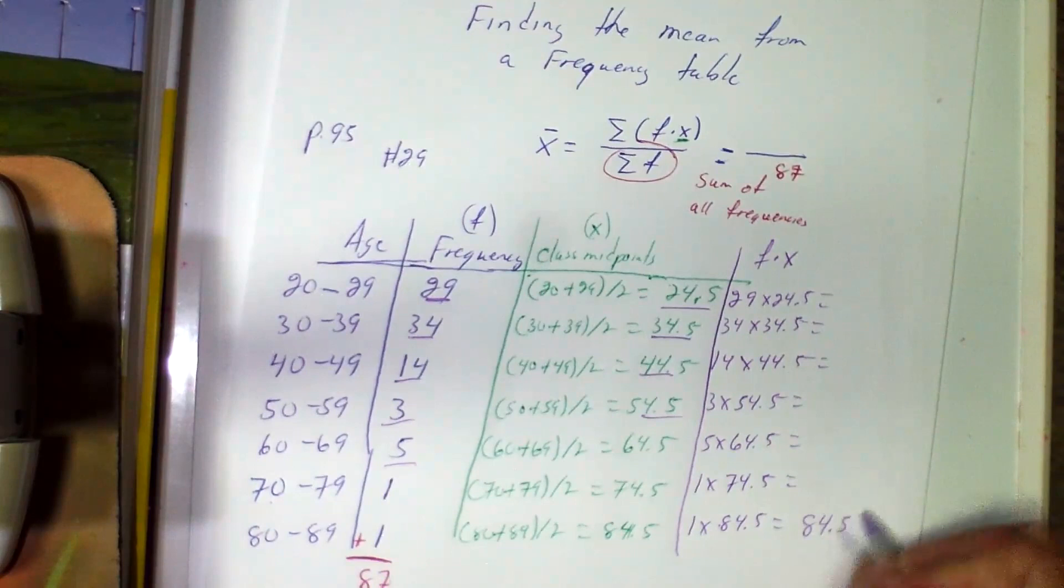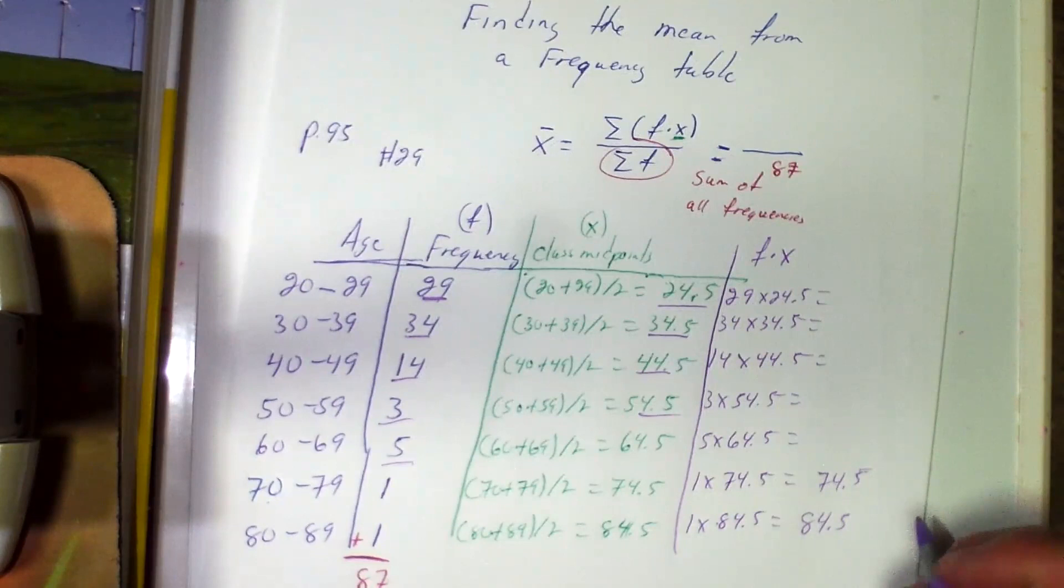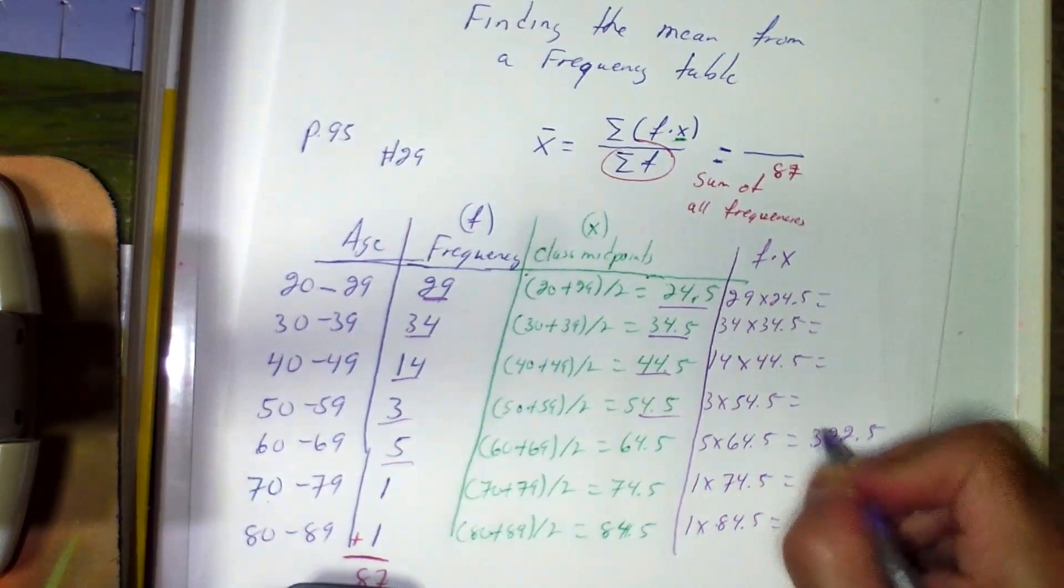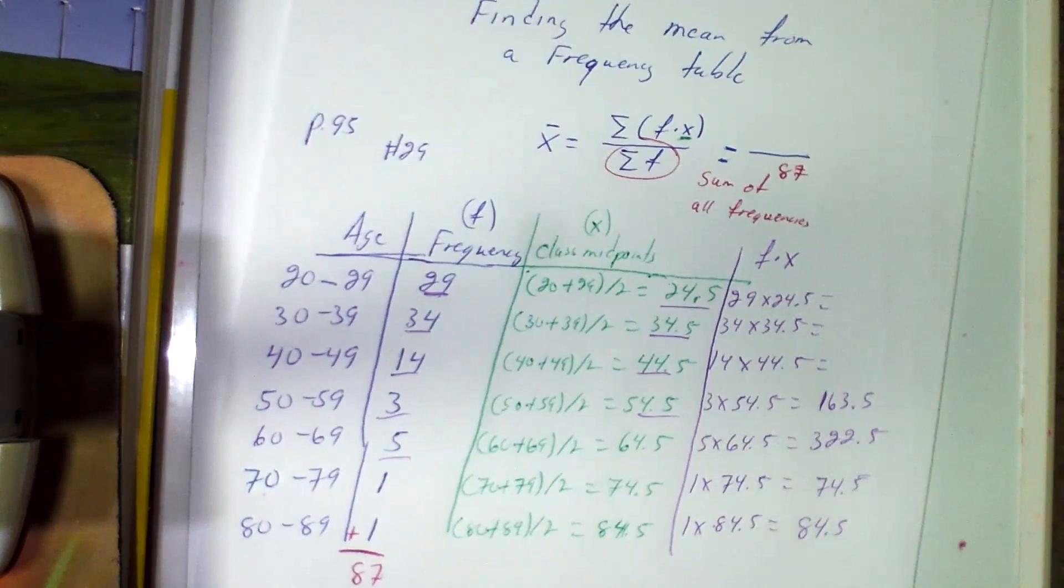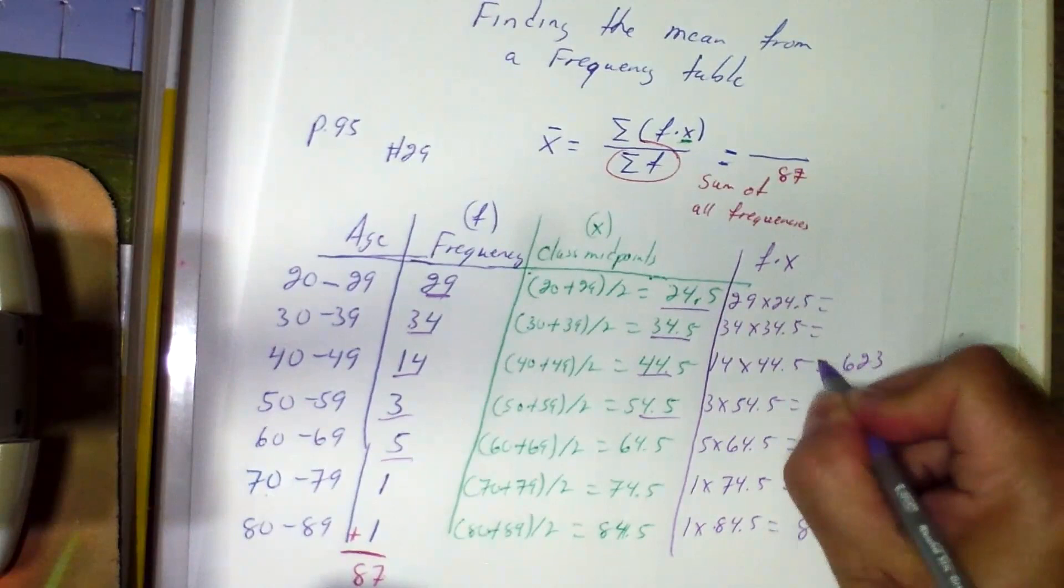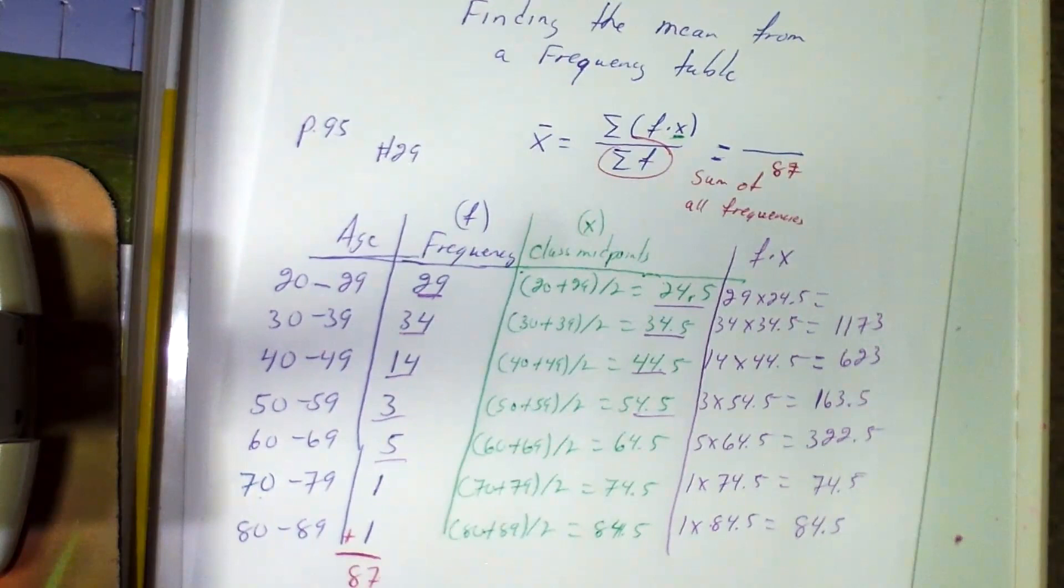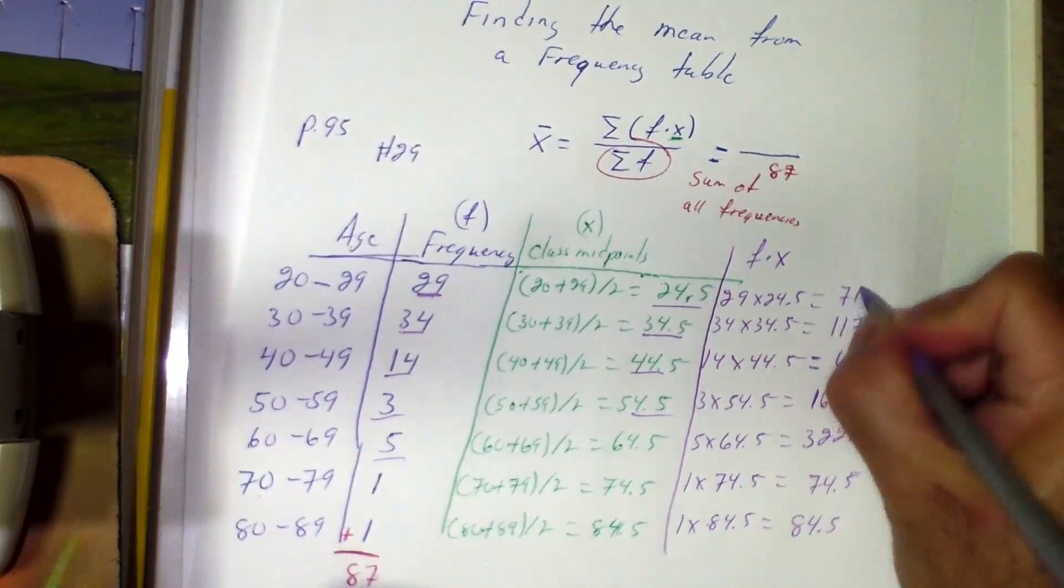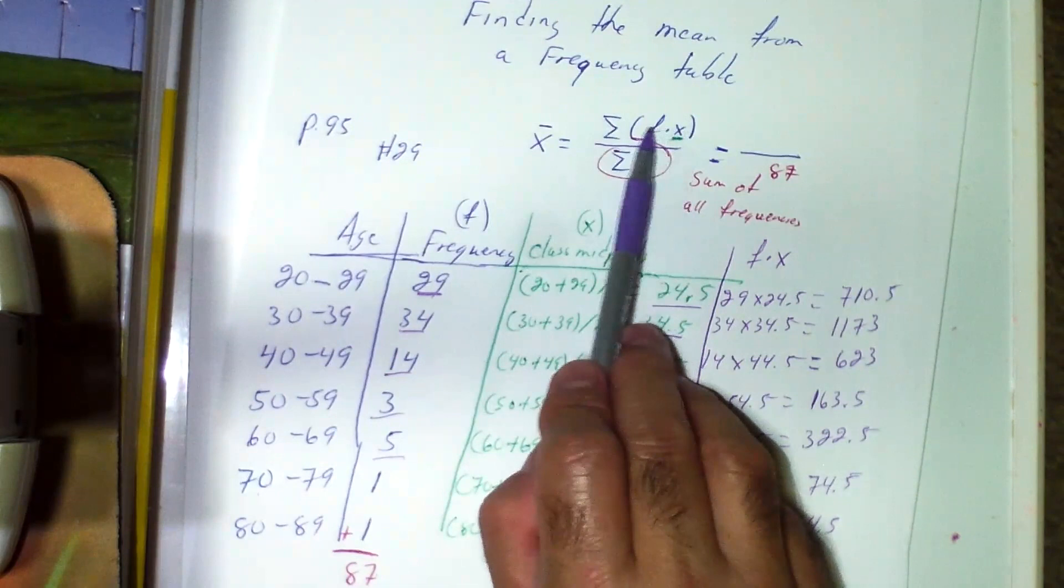And I'm going to put my results in here. So I'm going to go backwards. This is easy: 84.5, 74.5. Now I'm going to need my calculator to compute. 5 times 64.5 is 322.5. Next one: 3 times 54.5 is 163.5. Now I'm going to do 14 times 44.5 is 623. 34 times 34.5 is 1173. And 29 times 24.5 is 710.5. So these numbers represent F times X.